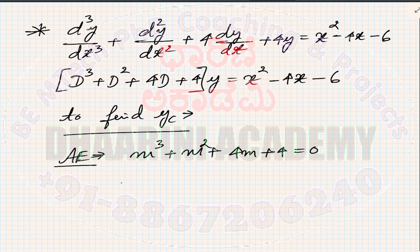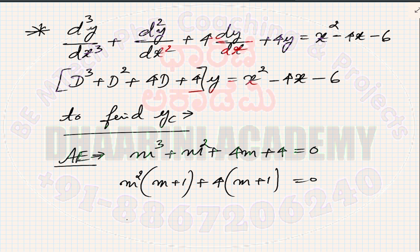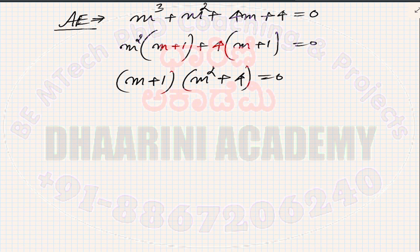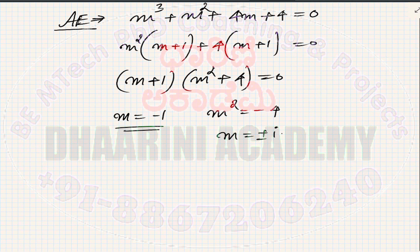The auxiliary equation is m³ + m² + 4m + 4 = 0. Factorizing: m²(m+1) + 4(m+1) = 0, so (m+1)(m²+4) = 0. This gives first root m = −1 (real, distinct), and m² = −4 so m = ±2i (complex conjugates).